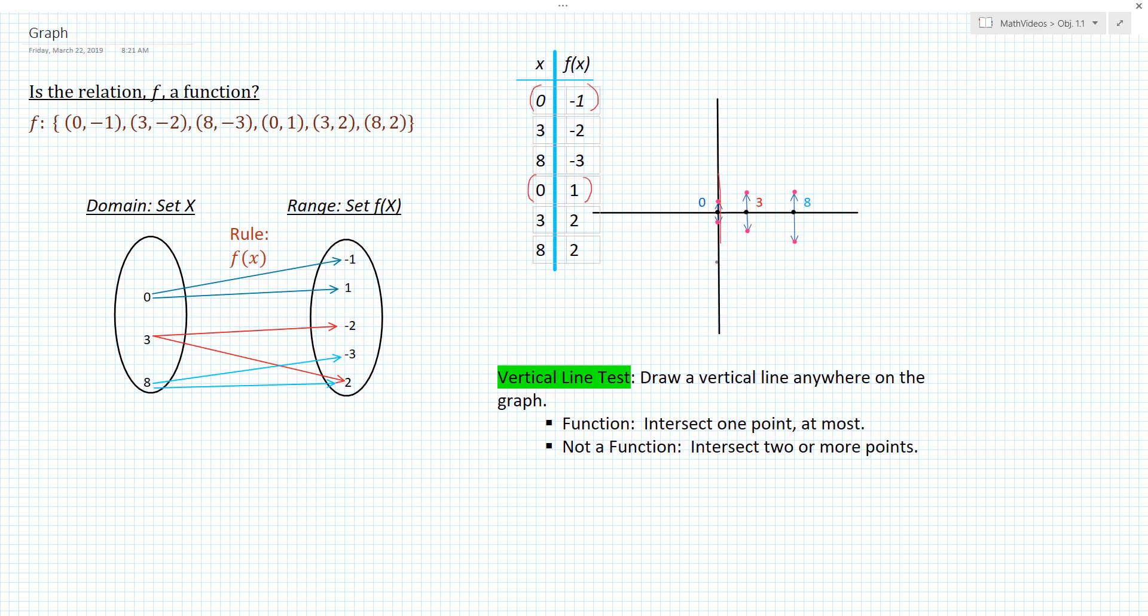notice that if you were to intersect the graph at two or more points, any time you drew one of those vertical lines, then you would not be a function, which is the case in our example. And we can see that when we draw our vertical lines, that we hit at two points, so we are therefore not a function.